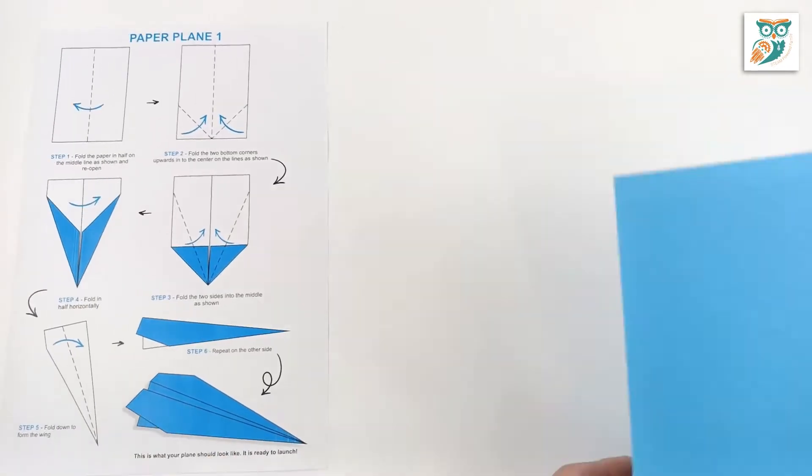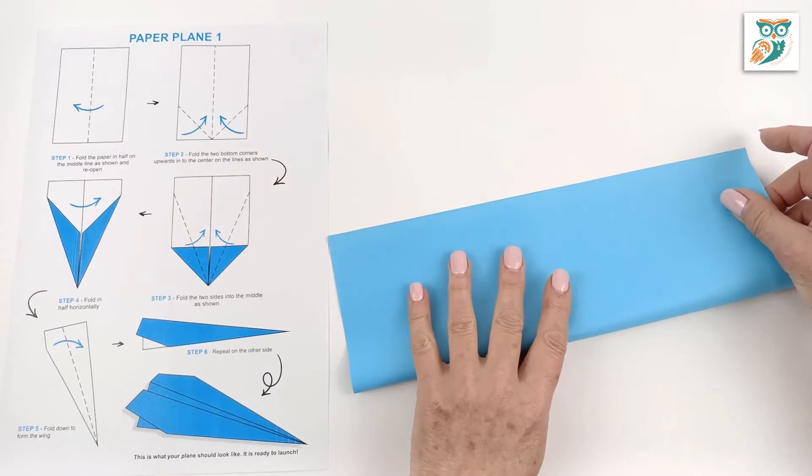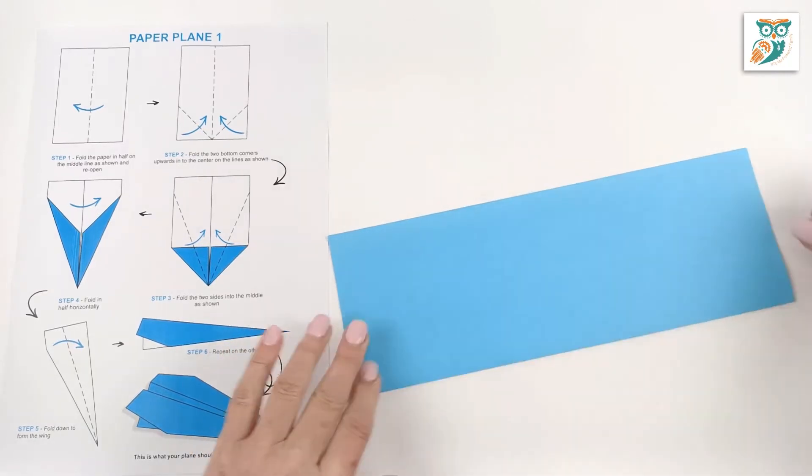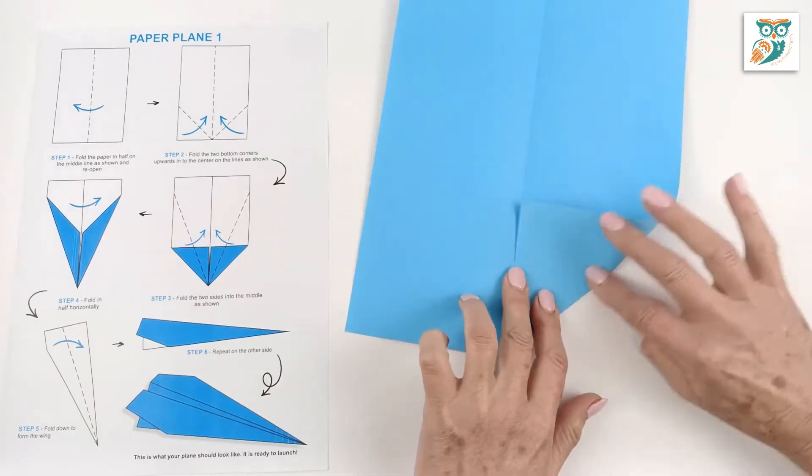And now we're going to make plane design number one. So we're starting with a standard sheet of paper and we're going to fold it in half. Now grab each corner and fold it into the center line.